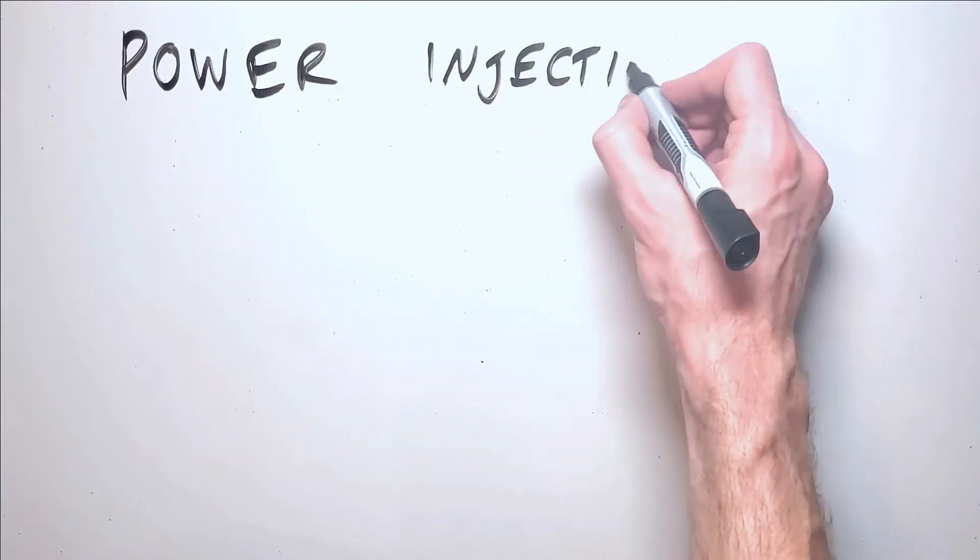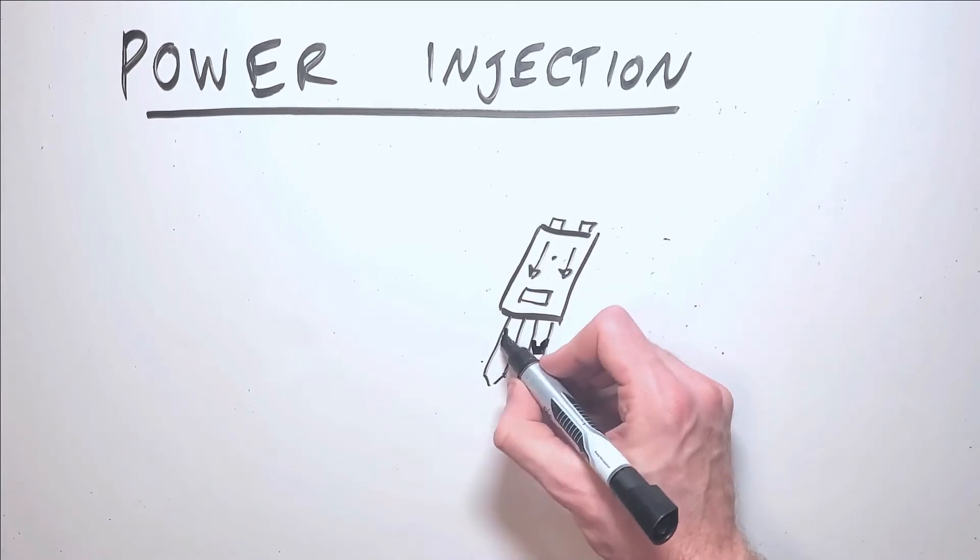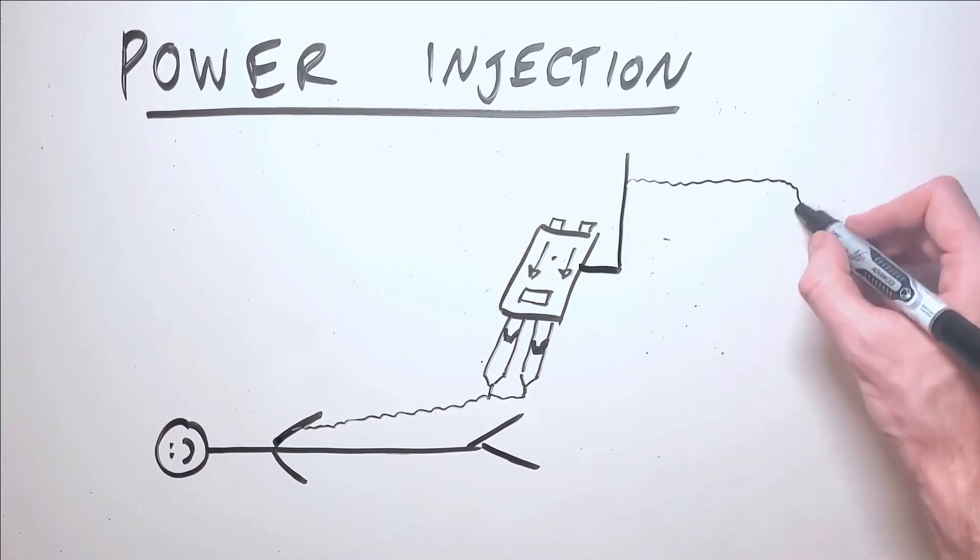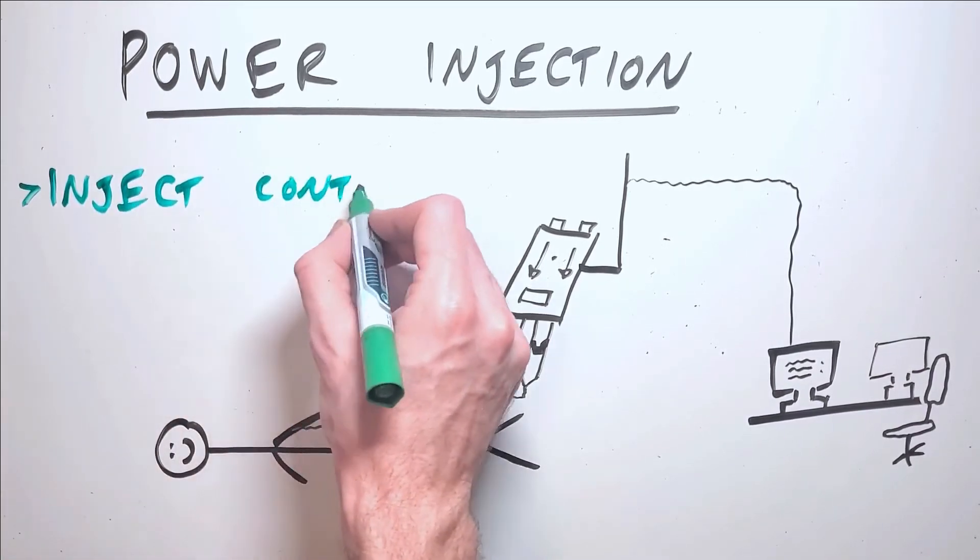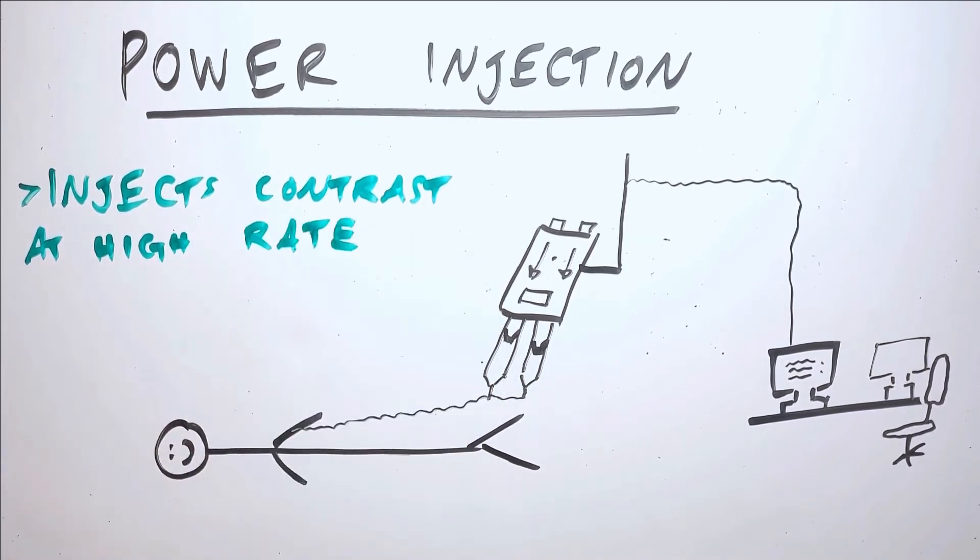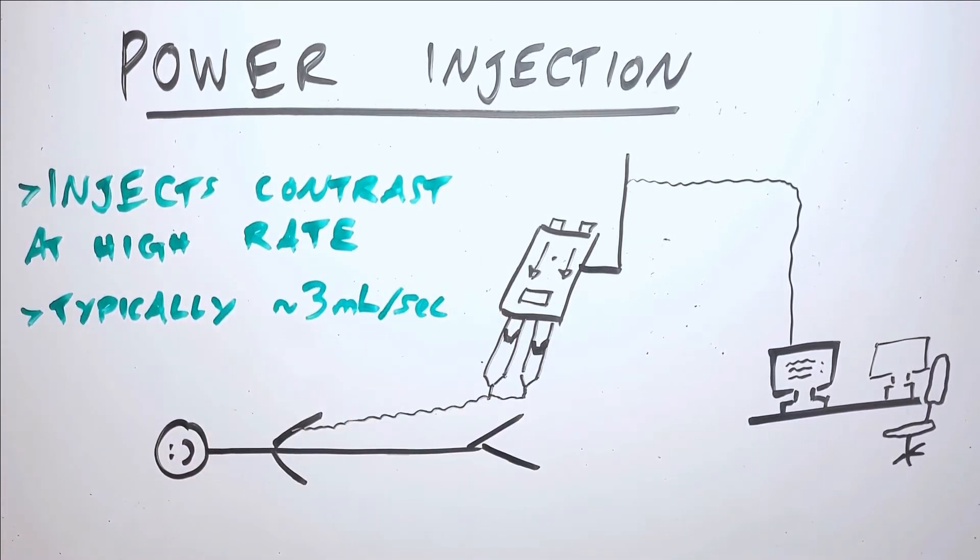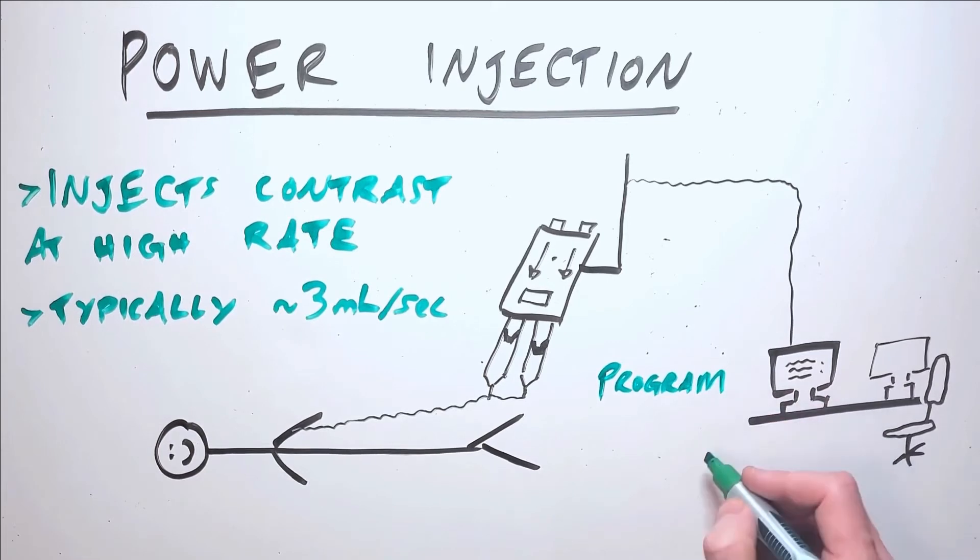Intravenous contrast is normally injected with a power injector. The power injector is a machine designed to inject IV contrast at a rapid and constant rate to introduce a bolus of contrast into the patient's vascular system in a short period of time. The flow rate is often between 2 and 3 milliliters per second for routine studies on adult patients but can be 5 or 6 milliliters per second for studies requiring a very concentrated short bolus, as in CT angiography studies which look specifically at the vessels themselves.